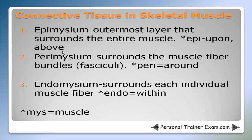There are three types of connective tissue found in skeletal muscle: epimysium, perimysium, and endomysium. Epimysium is the outermost layer that surrounds the entire muscle. Perimysium surrounds the muscle fiber bundles, which are called fasciculi. Endomysium surrounds each individual muscle fiber.